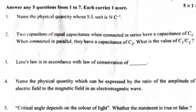Question 2: Two capacitors of equal capacitance when connected in series have a capacitance of C1. When connected in parallel, they have a capacitance of C2. What is the value of C1 by C2? Answer: C1 equals C by 2, C2 equals 2C, so C1 by C2 equals 1 by 4.